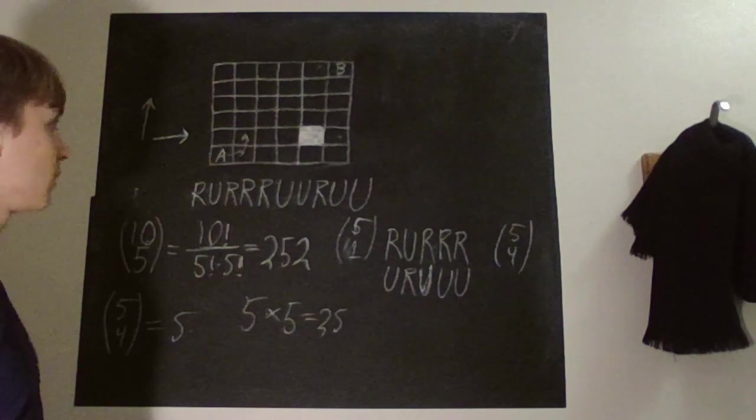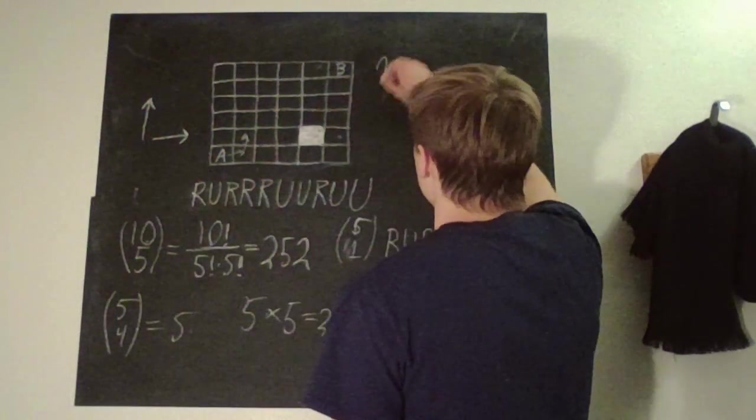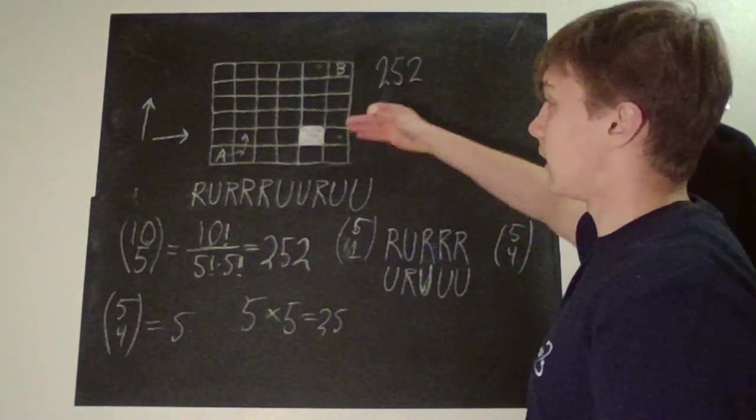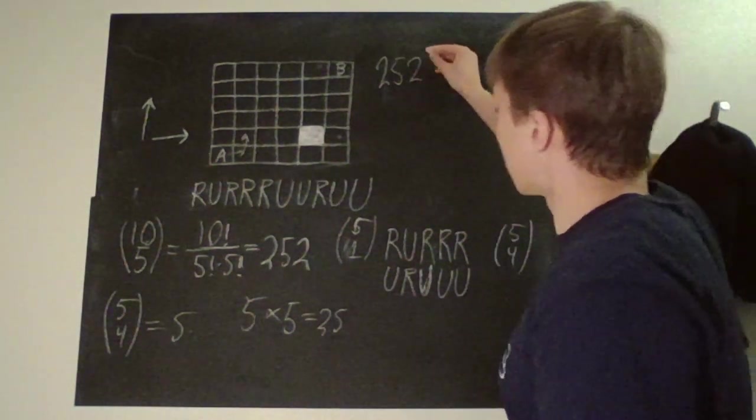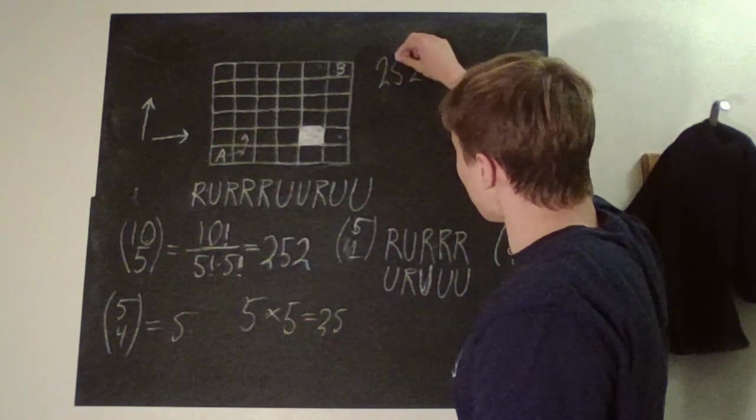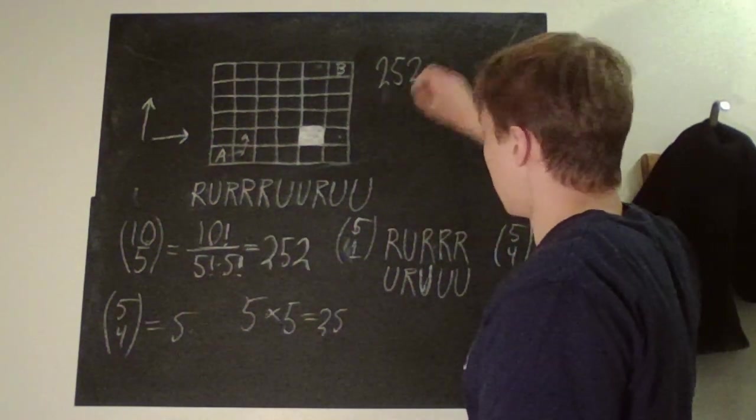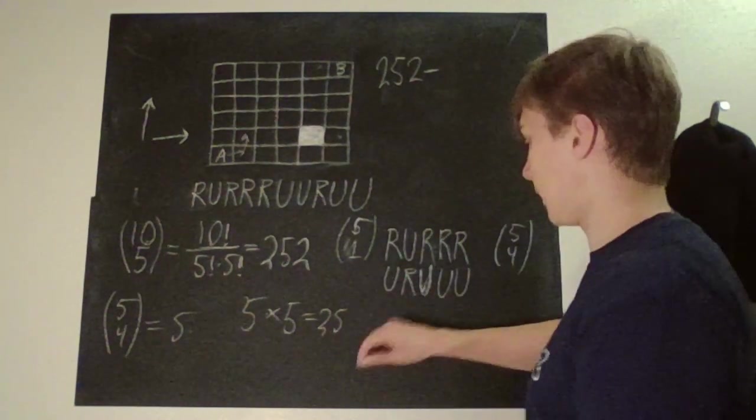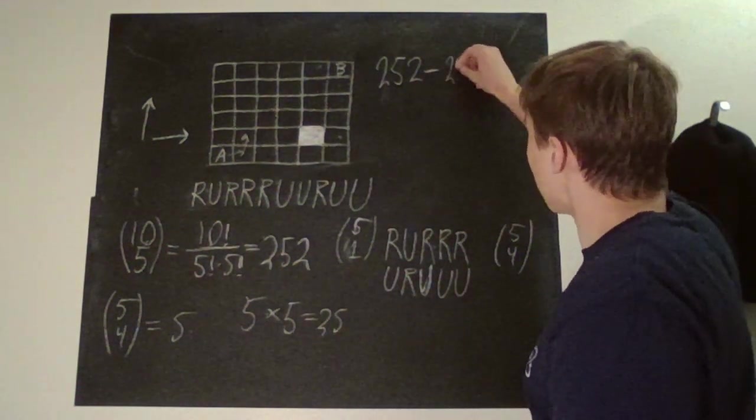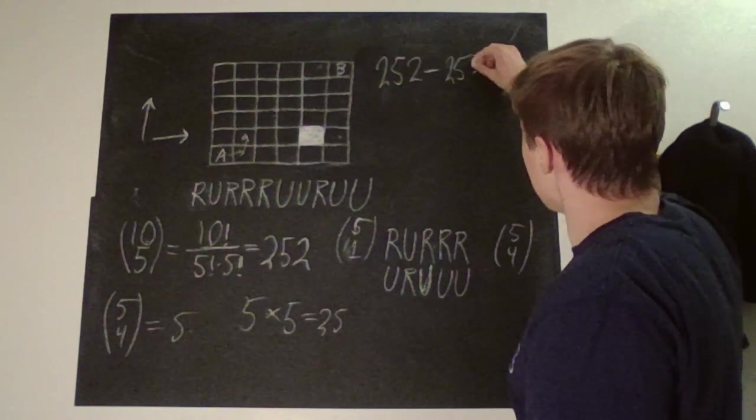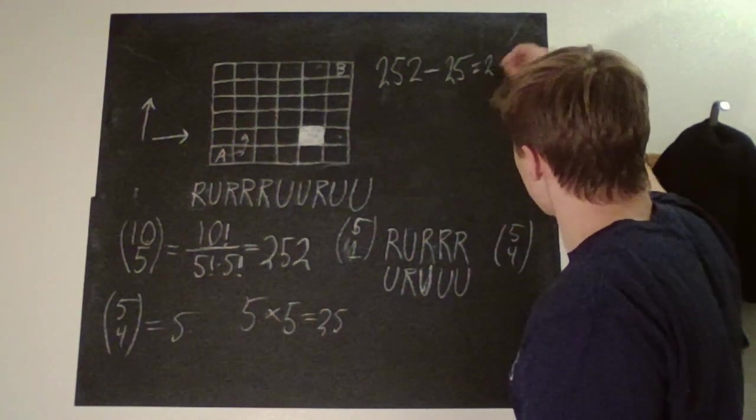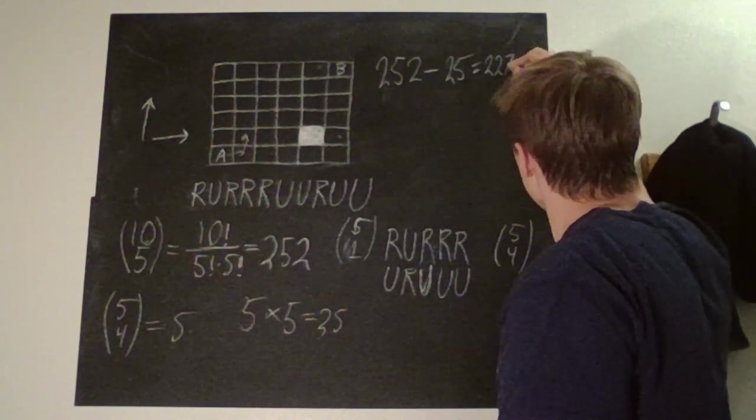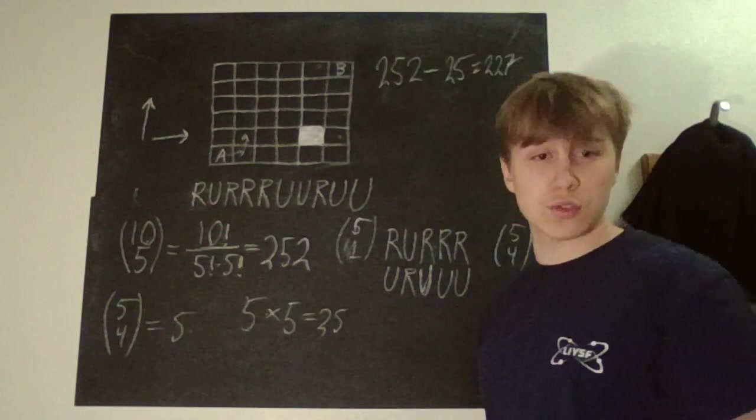Okay, so now, what do we have? We have 252 possible paths. And then to get how many paths where we don't move through the box, we just subtract how many paths where we did move through the box. And that was, as we said, 25. And this is equal to 227. So that is the correct answer.